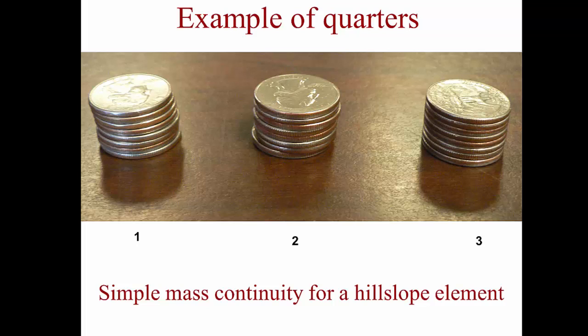I want to explain the idea of continuity. Here we have three columns of quarters, which could represent three columns of soil, or three temperature measurements, or three concentrations of chemistry. The idea is that these are very close together, so they represent a continuous profile.